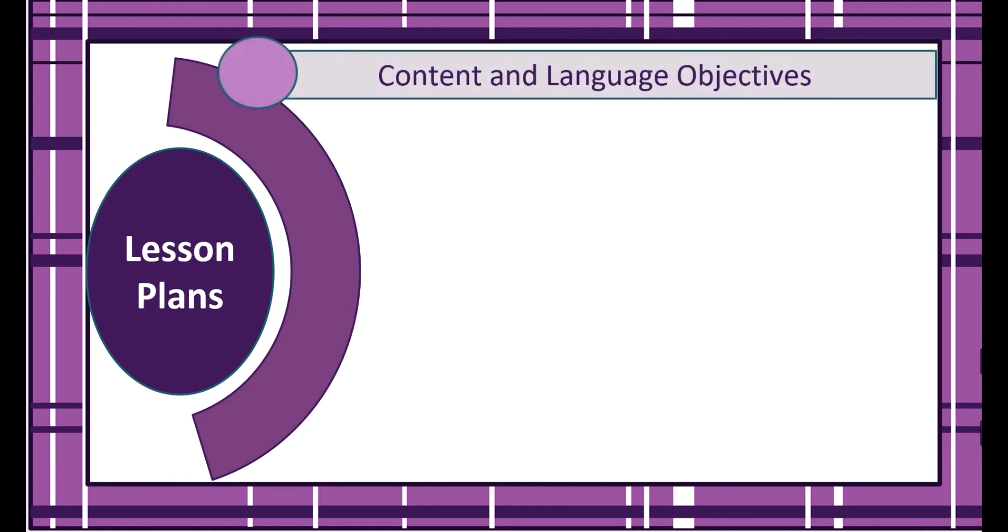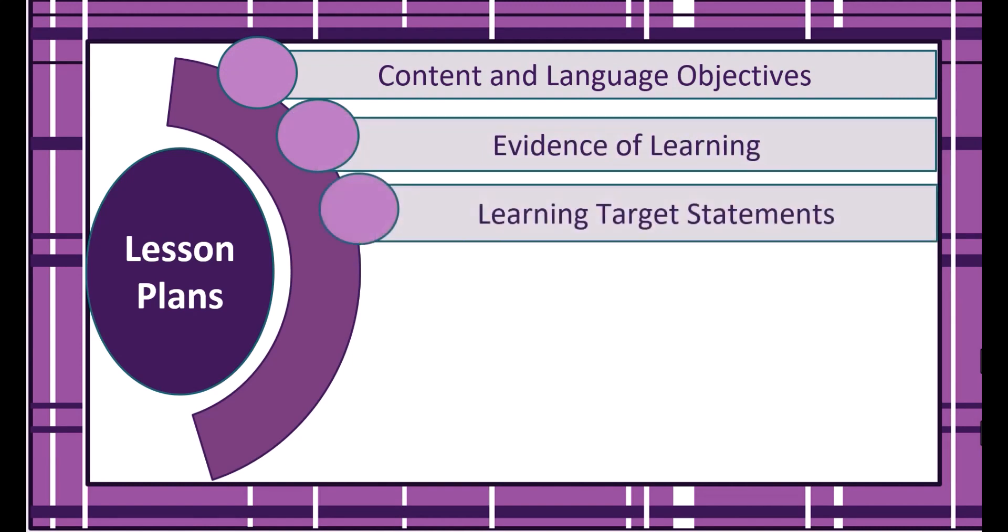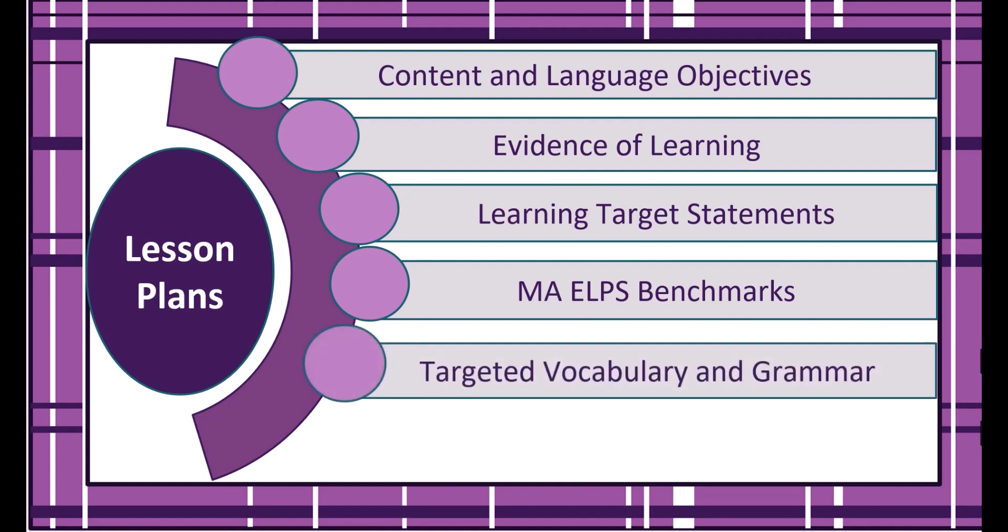The DESE SABES template for lesson plans includes these components: the lesson's content and language objectives, evidence of learning, also known as the assessments, learning target statements—these are essentially the objectives written from a student's perspective—the MASS ELPS benchmarks that align with the lesson's objectives, additional targeted vocabulary and grammar, and then the learning plan.